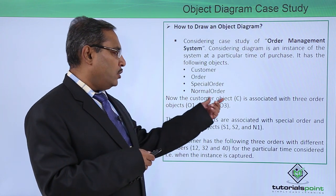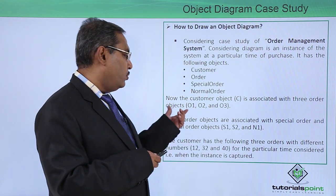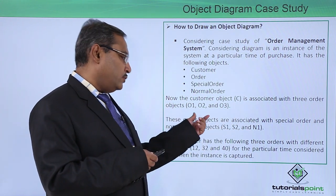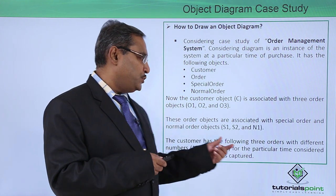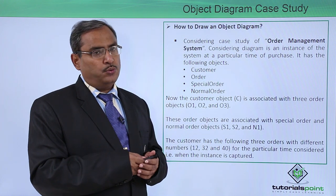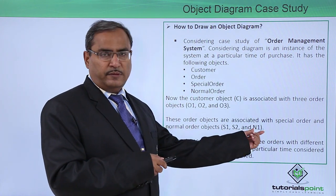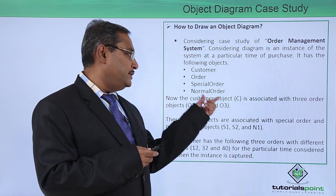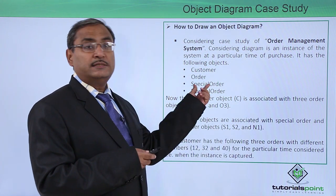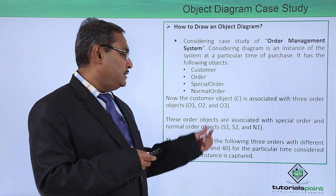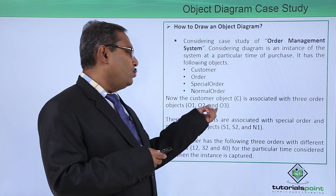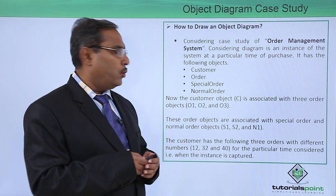The customer object C is associated with three orders: O1, O2, and O3. These order objects are associated with the special order and normal order objects — S1, S2, and N1. N1 is the object under the normal order class. S1 and S2 are objects under the special order class. C is the object under customer, and O1, O2, O3 are the three objects under the class order.